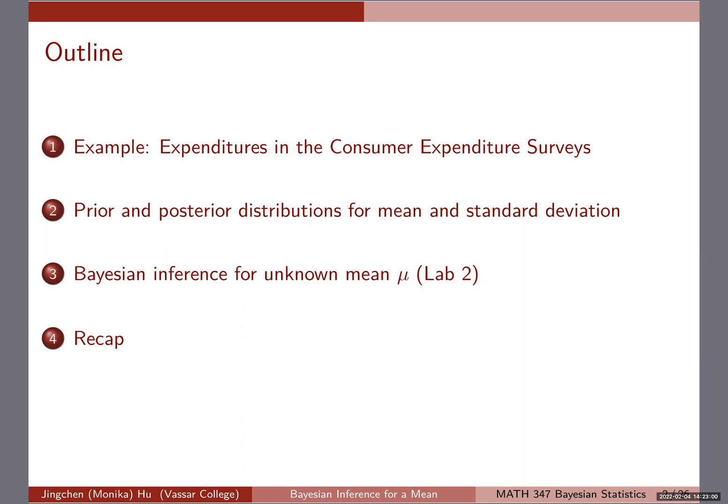We're going to focus on one particular variable, the expenditure, which is a continuous variable. After that, we'll have some prior and posterior distributions for the mean and standard deviation. I'll highlight a summary of how to do Bayesian inference, and then most of the work will be done through Lab 2 for you to practice the different ways of doing inference.